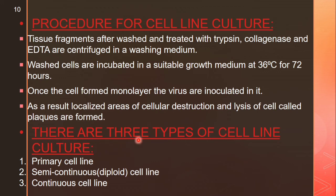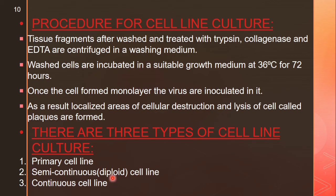There are three types of cell line culture: primary cell line culture, semi-continuous diploid cell line culture, and continuous cell line culture.